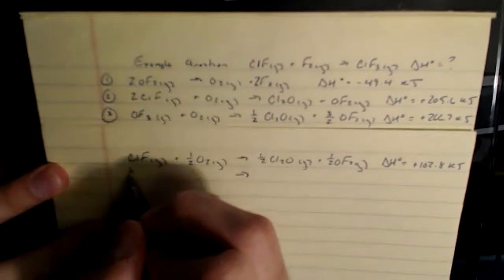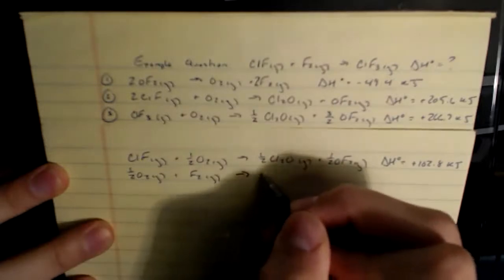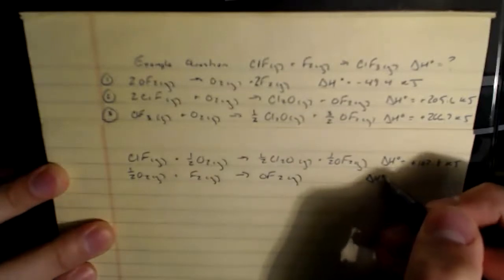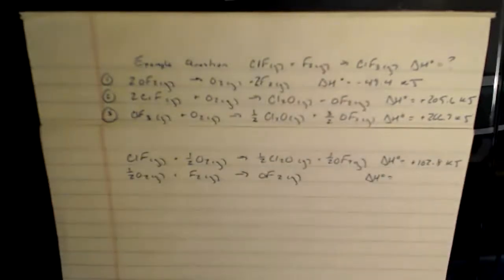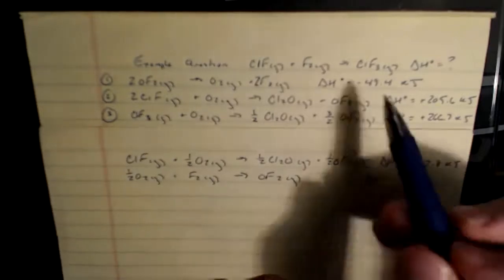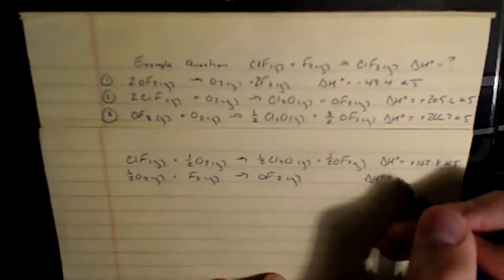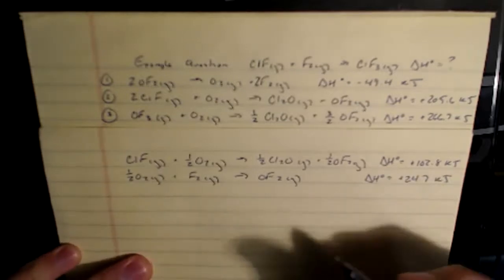So that's going to give me half an O2 gas, plus now a single F2 gas, going to make a single OF2 gas. And those two changes that I made to the equation, I also make to the enthalpy value. So it was negative 49.4. It becomes positive because I flipped the reaction. Then I also have to half it. So negative 49.4, I flipped the reaction, so I flipped the sign. I halved the reaction, so I halved the value. Finishes at 24.7 kilojoules. That gives me my F2, a single one where I want it as a reactant.